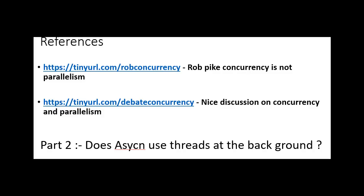This brings us to the end of Part 1. In the Part 2 video we will talk about one more controversial statement: that Asynchronous or Asynchrony uses threads in the background — that is a very misunderstood concept. We created Part 1 and Part 2 because Concurrency is very much connected with Asynchrony, which is why we have kept both videos one after another. Let us start with Part 2: Does Async use threads at the background? When we create code of an asynchronous nature, does it mean it has to create threads at the background? Thank you very much.